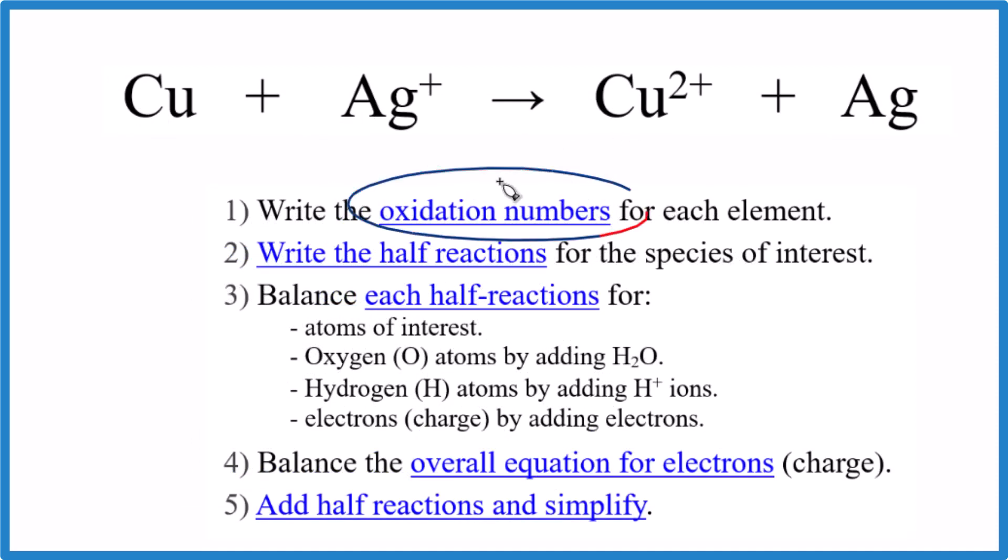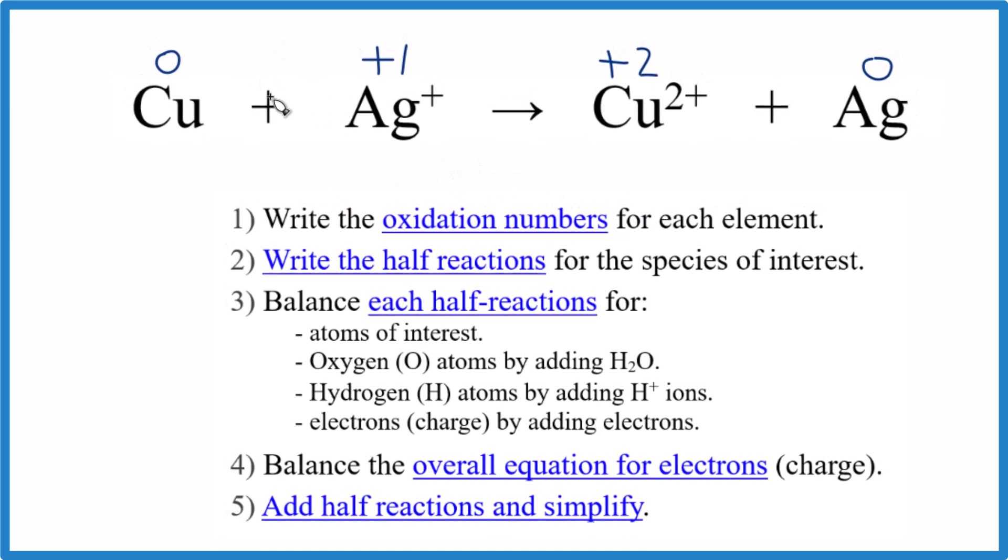So first, I'll write the oxidation numbers. In this case, they overlap with ionic charge. Not always the case, but it works out here. So the copper goes from zero to plus two, the silver plus one to zero.